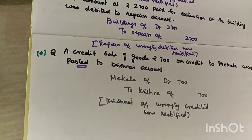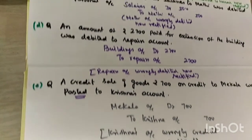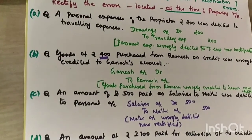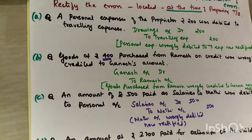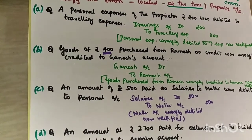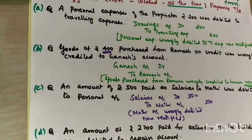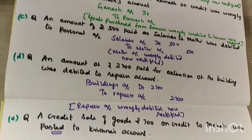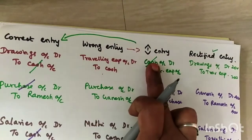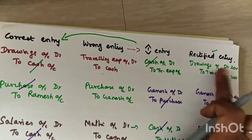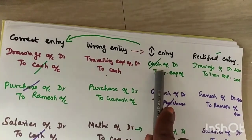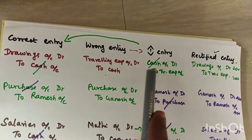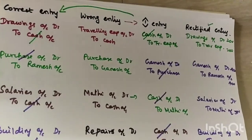This is the solution for exercise sum number 7. At the time of preparing the trial balance: identify the correct entry and wrong entry, write the inverse of the wrong entry, then cancel matching items between the inverse entry and correct entry — the remaining items give you the rectified entry. Hope you are clear with this.